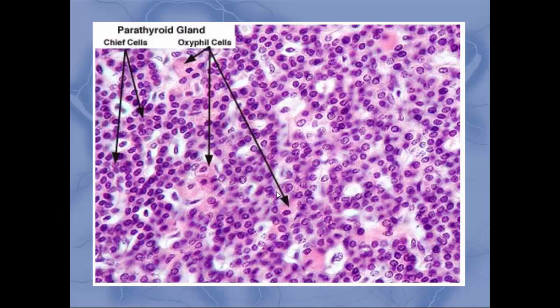Here is how the parathyroid gland looks in cross-section — no real discernible pattern, just a jumbled arrangement of cells. We won't focus on the oxyphil cells or chief cells in this lecture.